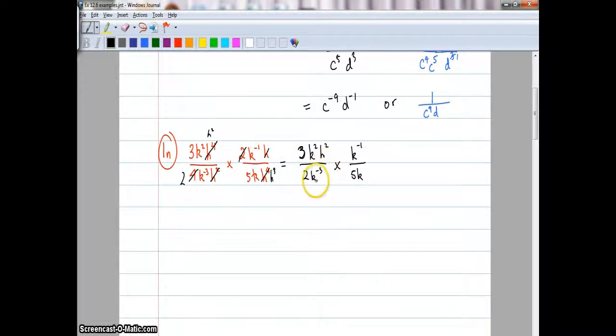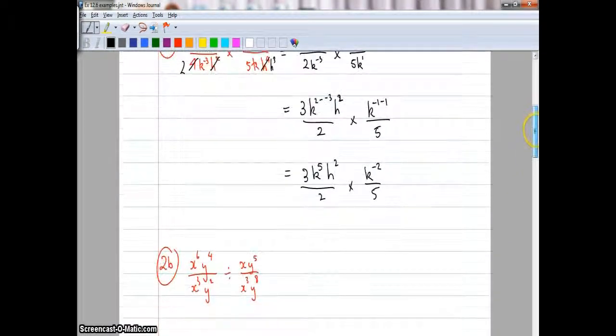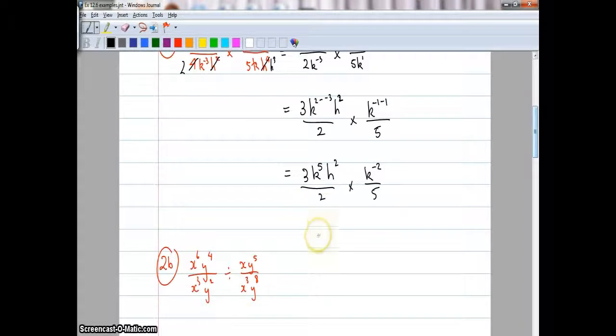Now I'm going to minus. Whenever I've got a divide I can minus the powers, so K2 I'm going to minus the negative 3, so it becomes 3K2 minus negative 3, H squared over 2, multiplied by K negative 1 minus 1 because the power on the K there is a 1. That becomes 3K5 H2 over 2 multiplied by K to the negative 2 over 5. Now the last thing I need to do is put the fractions together, and I get 3K3 H squared over 10, because 5 minus 2 when I multiply them I add the powers.